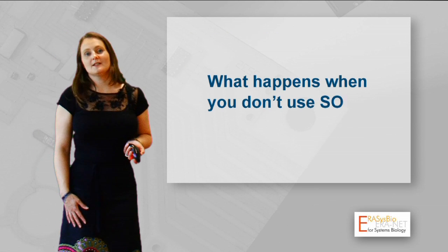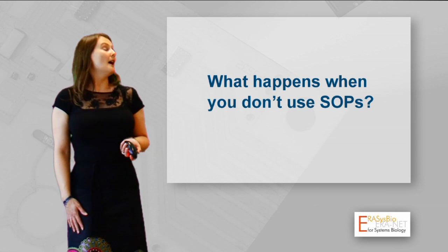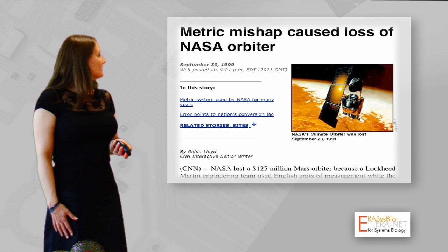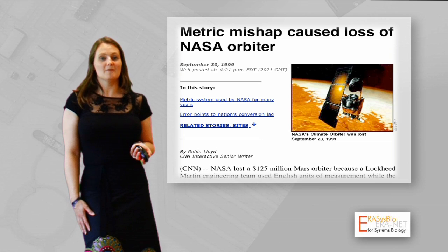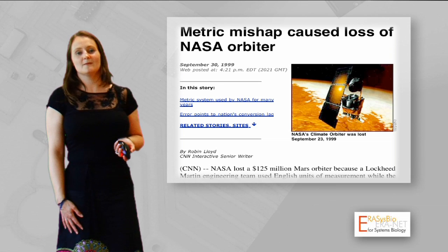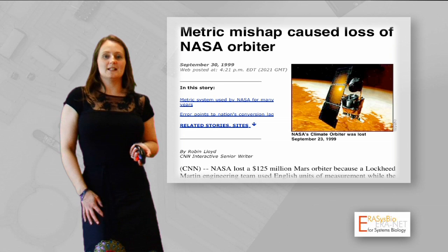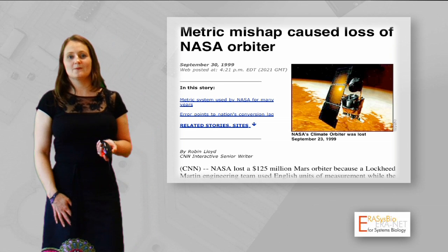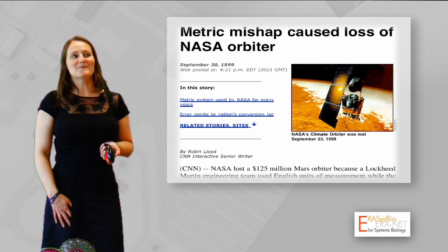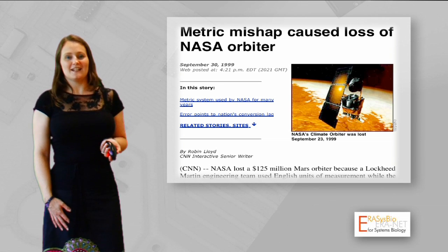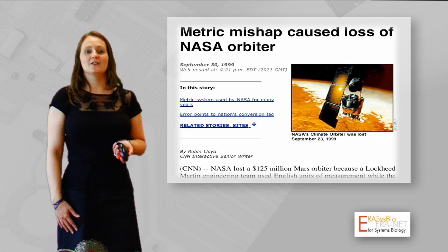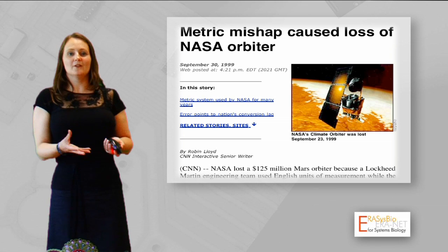What happens when you don't use standard operating procedures? Well, it can be a catastrophic mistake. This is a news report from 1999 from CNN about the loss of a $125 million Mars orbiter. The people in this experiment were actually trying to follow standard operating procedures, but didn't do it in enough detail. There were two groups of scientists — one using imperial measurements and another using metric. Their measurements were off, it cost a lot of money, and it was very embarrassing. So not only do you have to adopt SOPs, you have to really believe and follow everything to the letter.